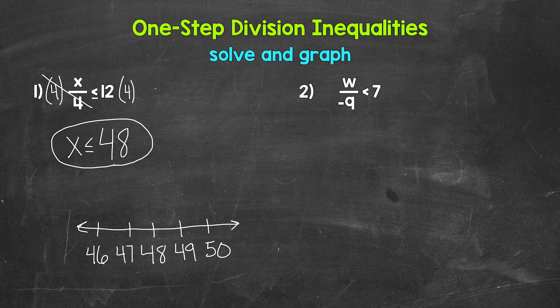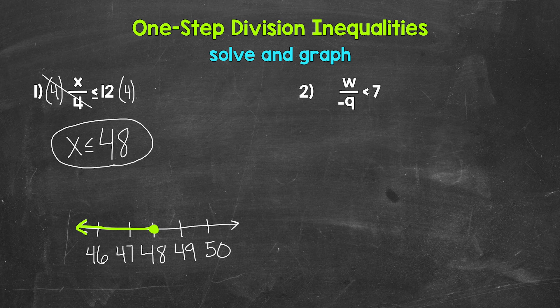So we are graphing all of the solutions here. Remember, when it comes to graphing inequalities, a filled circle shows that we are including that number, and an open circle shows that we are not including that number. So we need a filled circle at 48, and then an arrow going left towards everything less than 48. The filled circle shows 48 is included, and the arrow going left represents all values less than 48. So that's our graph.